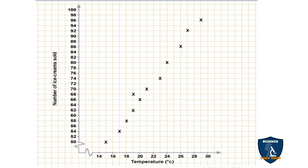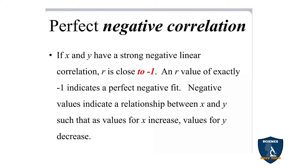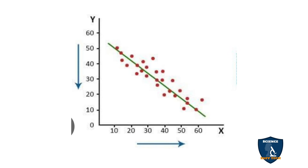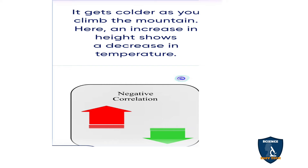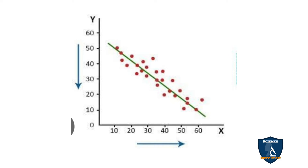In the graph representation, as temperature increases, the sales of ice cream also increases — showing positive correlation. For perfect negative correlation, if one variable increases the other decreases — for example, if hemoglobin values of the mother increases, incidence of low birth weight decreases. Or as height climbed on a mountain increases, temperature decreases. The graphical representation goes in the inverse direction.